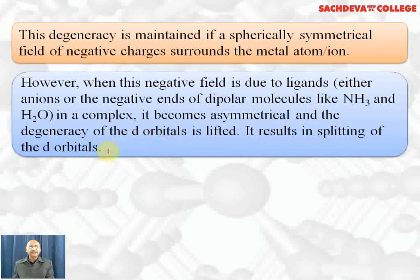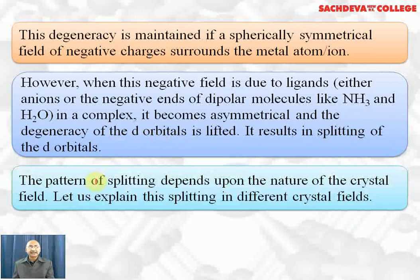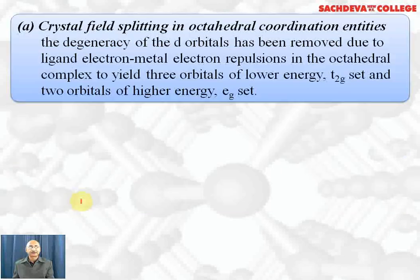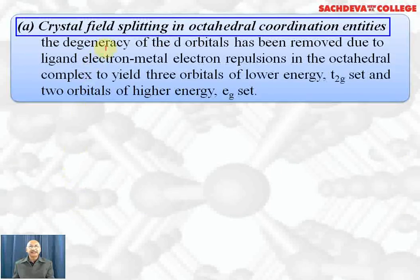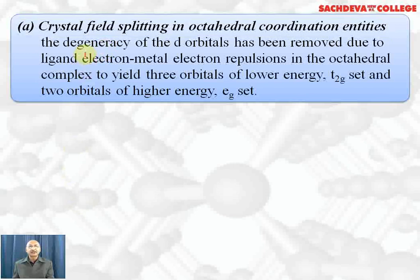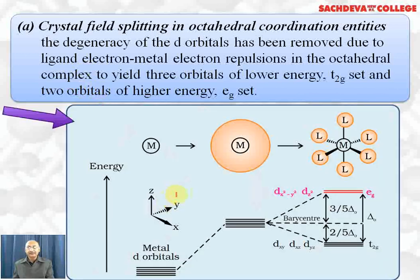The removal of degeneracy results in splitting of d orbitals. The pattern of splitting depends upon the nature of the crystal field. In octahedral coordination entities, the degeneracy of the d orbitals is removed due to ligand electron–metal electron repulsion, yielding three orbitals of lower energy (t₂g set) and two orbitals of higher energy (eg set).